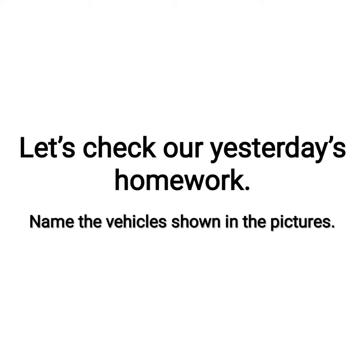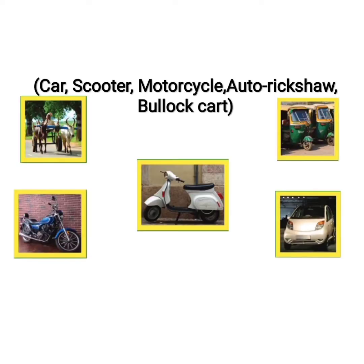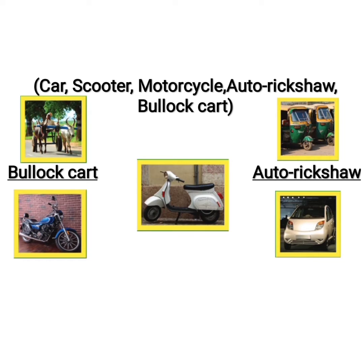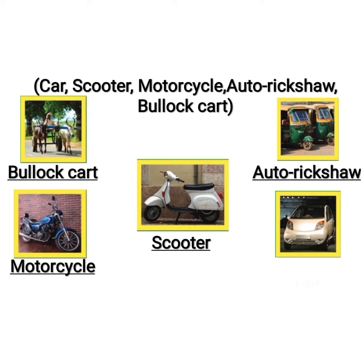Let's check our yesterday's homework. Name the vehicles shown in the pictures. I hope you all must be ready with your homework. The first one is bullock cart. Second is an auto rickshaw. Third one is motorcycle. This is scooter. And the last one is car.